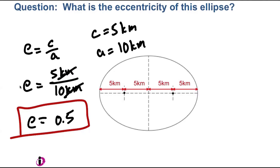Interestingly, eccentricity does not have a unit. It's a unitless number that just quantifies how squashed this ellipse is. Whatever units c and a have, you have to use the same unit so they cancel out and you get a unitless number for eccentricity. And this is important: eccentricity has to be a number between 0 and 1. If you ever do a calculation of eccentricity and you get a number that is not between 0 and 1, you have done something wrong — go back to the drawing board and try again.